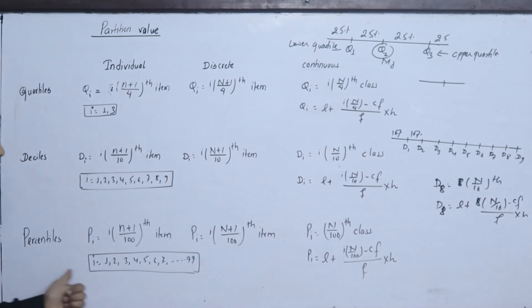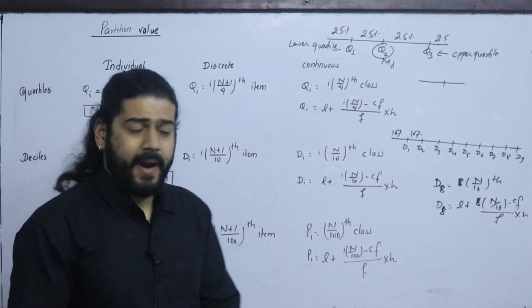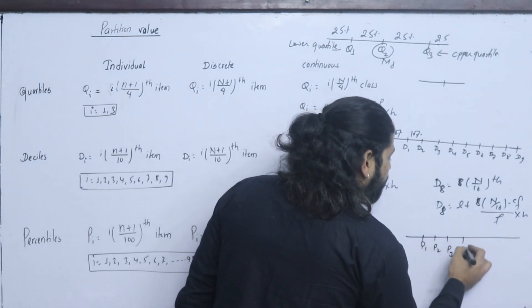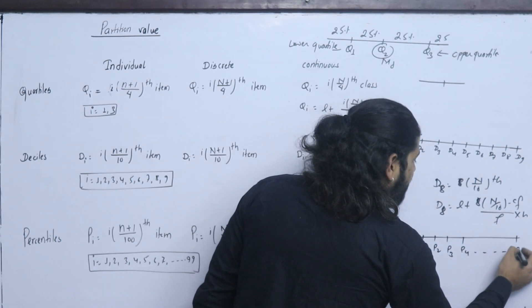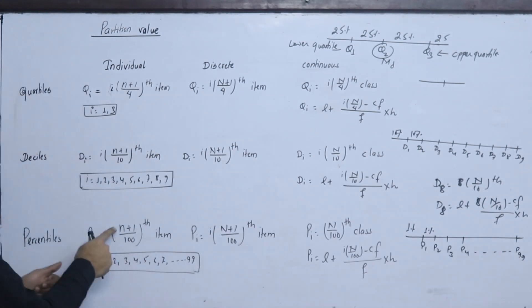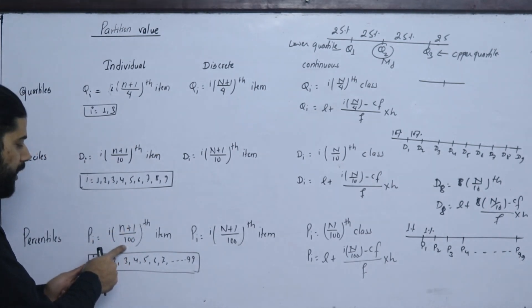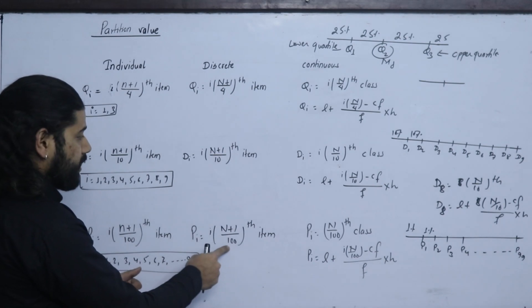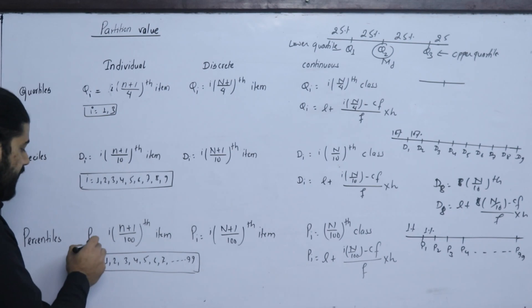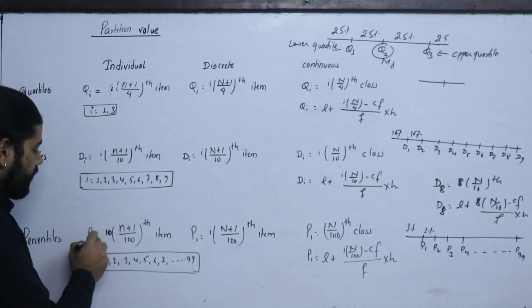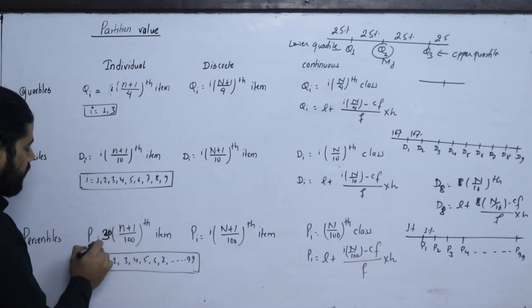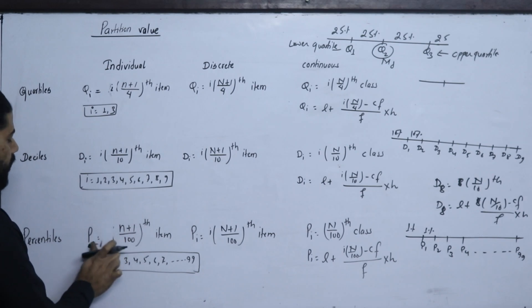For Percentiles, the data is divided into 100 equal parts giving P1 through P99, each part containing 1%. For individual series: P_i = i(n+1)/100. Examples include P10 (10th percentile), P20, P25, P30, and P80 (80th percentile).